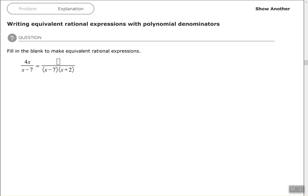Hey, good people, Arthur Morris here. I hope all is well. In this video we're going to look at writing equivalent rational expressions with polynomial denominators. We have 4x over x minus 7, and we want to